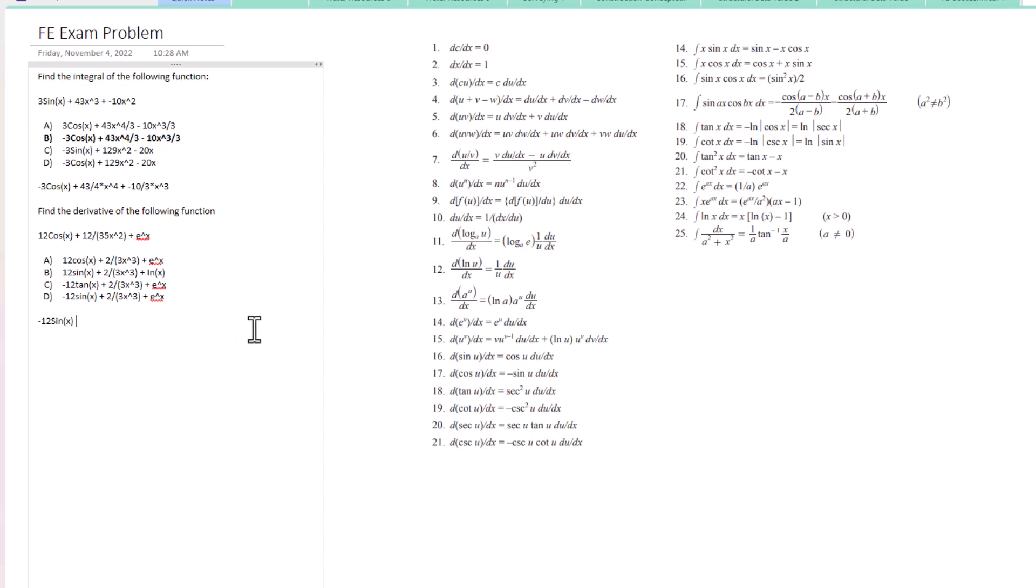Next we're going to apply the identity low d high minus high d low over the square of what's below. So low is 35x² times d high, which is actually just zero because it's a whole number.